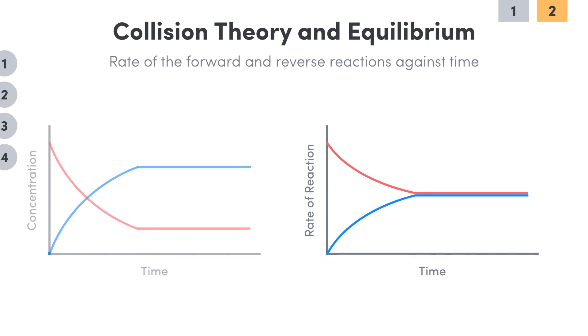The forward reaction rate starts off high and decreases as the number of reactant particles decreases. The reverse reaction rate starts off low but increases as the number of product particles increases. They both finally reach a point where the rate of the forward reaction equals the rate of the reverse reaction, and this system is now at equilibrium.